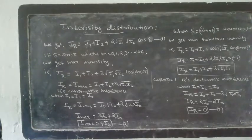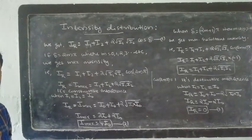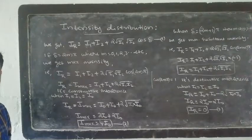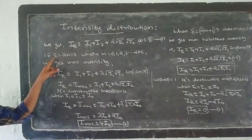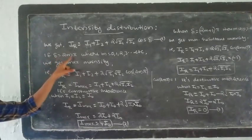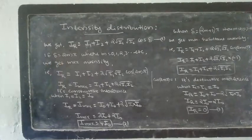Condition of constructive and destructive interference in terms of phase difference. For constructive interference, delta is equal to 2mπ, where m = 0, 1, 2, 3, etc.